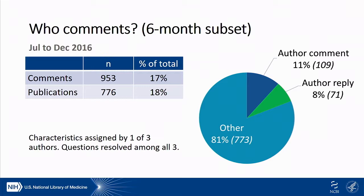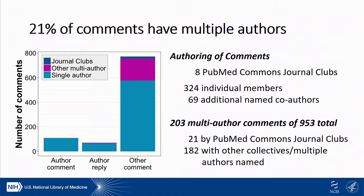For the study I'm talking about here, we wanted to get a better sense of who is commenting on PubMed Commons. We took a six-month subset from July to December 2016. The proportion of comments and publications in this subset is similar to what we would expect from the distribution across the full three-year period. In keeping with our previous analysis, about 20% of comments are contributed by authors. We also reviewed comments looking for evidence of multiple authors contributing, and found that a lot of these comments actually have multiple authors listed within the text.